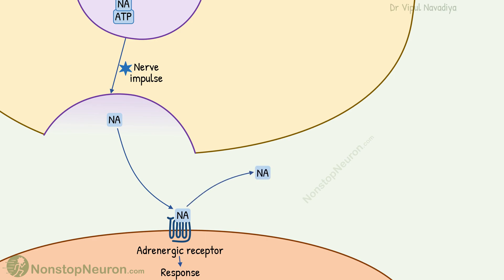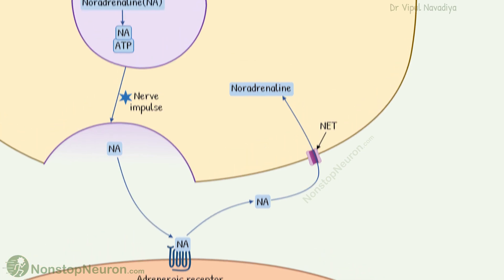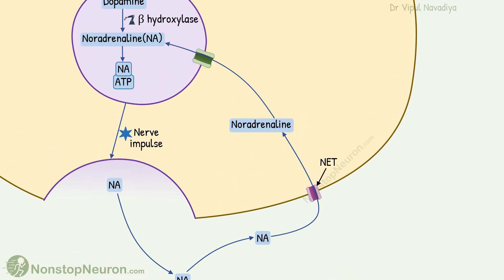There are two main mechanisms of termination of its action. First, most of the noradrenaline is taken up back into the nerve terminal by the norepinephrine transporter, or NET. From here, most of the noradrenaline is taken up into the vesicle by VMAT for reuse. If it remains in the cytoplasm, it is degraded by monoamine oxidase, or MAO.